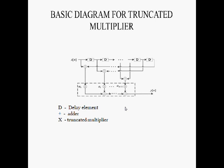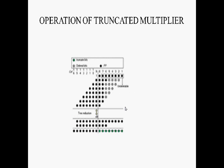This is the basic diagram of the truncated multiplier. X of N is the input value. D is the delay element, used to make the given value time-constant, meaning the value does not change. Before the delay element, the value has to be added. Once the delay element is applied, values get added side by side, and finally the output is taken as Y of N. The 8 values are added and the truncated operation is performed — the first 8 bits are considered and the next 8 bits are truncated. We are considering the MSB, not the LSB.